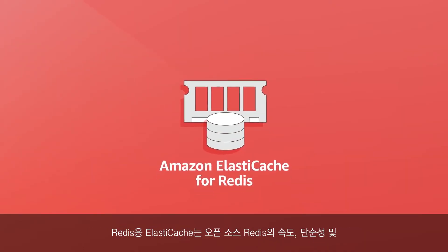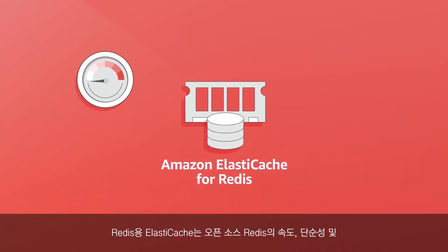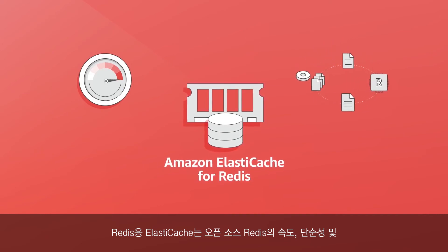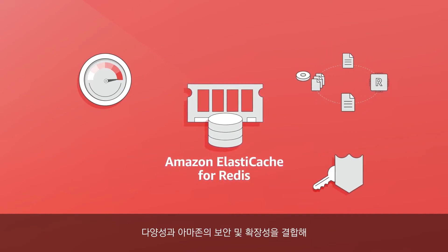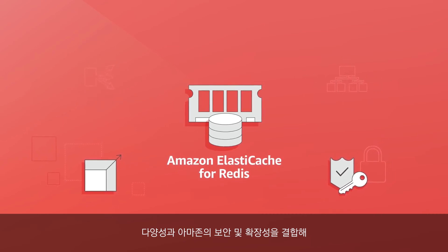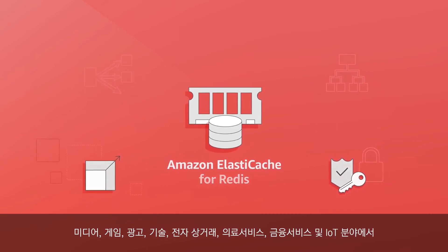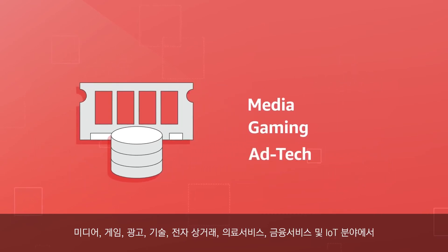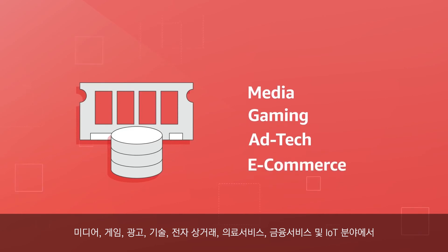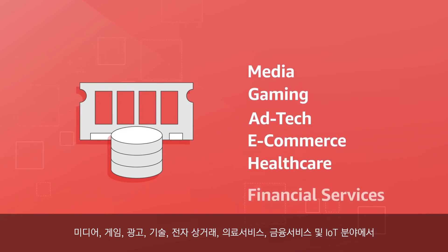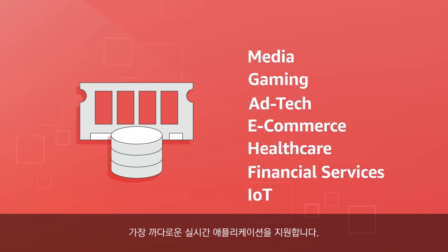ElastiCache combines the speed, simplicity, and versatility of open-source Redis with manageability, security, and scalability from Amazon to power the most demanding real-time applications in media, gaming, ad tech, e-commerce, healthcare, financial services, and IoT.